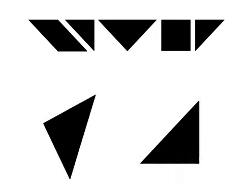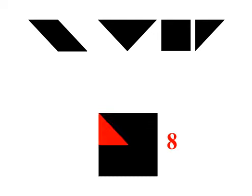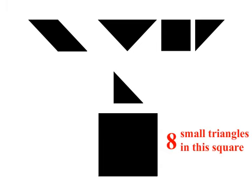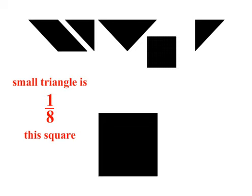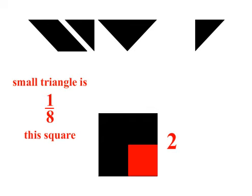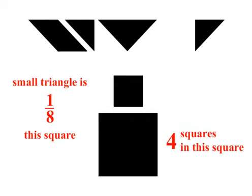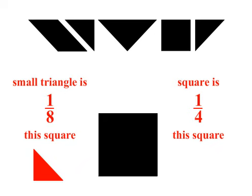Let's make a square with the 2 large triangles. There are 8 small triangles in the square made from the 2 large triangles, so the small triangle is 1 eighth the bigger square. There are 4 squares in the square made from the 2 large triangles, so the square is 1 fourth the bigger square.